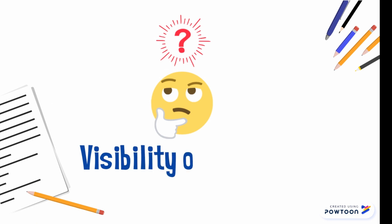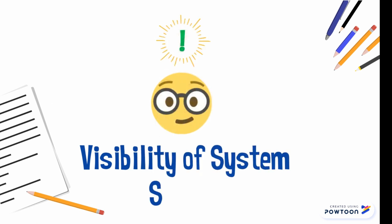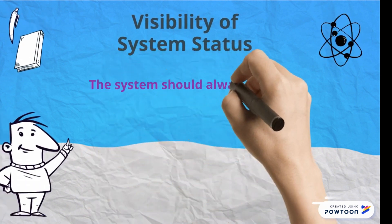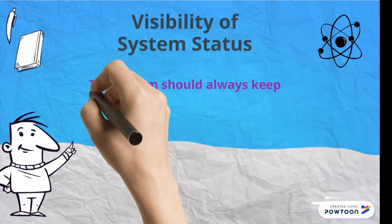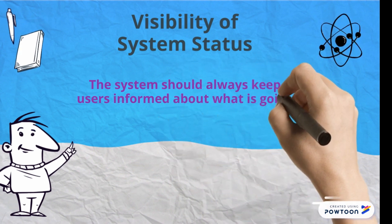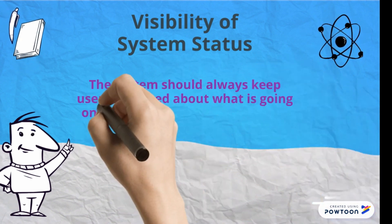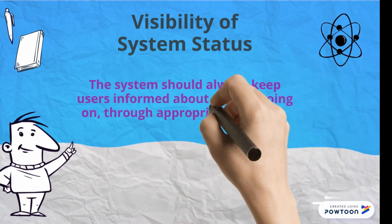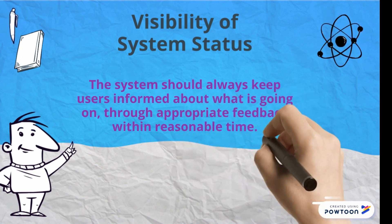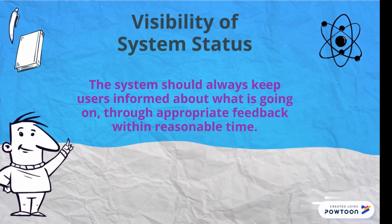Visibility of system status. A system should always keep the user informed about what is going on through appropriate feedback within reasonable time.